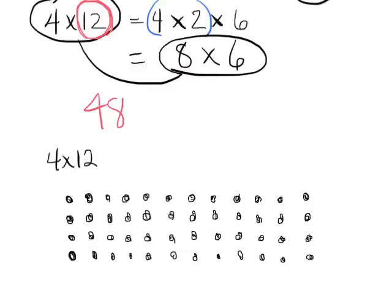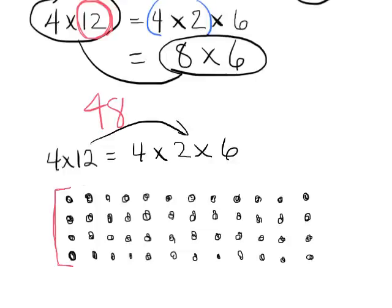Here we are. We now have a 4 by 12 array. Now, 4 by 12 might be a little tricky to see what's going on. But if we took the 12 and factored it to 2 times 6, all of a sudden what that's saying is here's our 4 by 2. I can put the parentheses right here — here's our 4 by 2 array, and we have one of them.